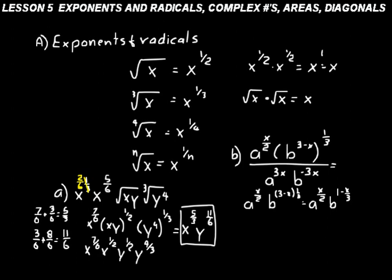When you have a power on the outside of parentheses, like b to the three minus x to the one-third power, you're multiplying that power by the exponent. It doesn't matter if that exponent is a single number, a single variable, or a sum — you just multiply that one-third by three minus x. Now let's put our denominator back in: a to the three x, b to the minus three x.